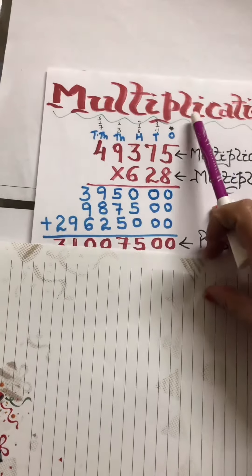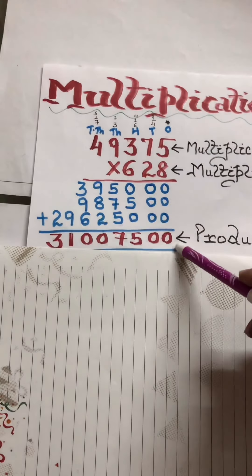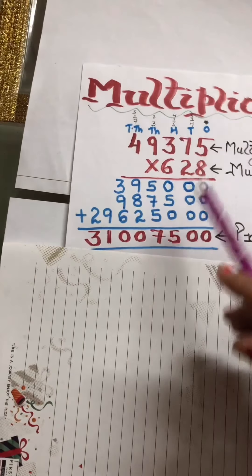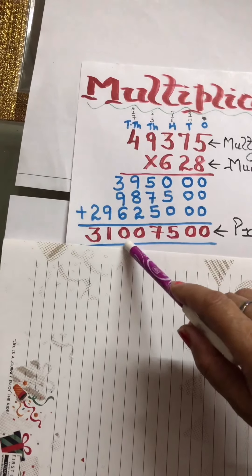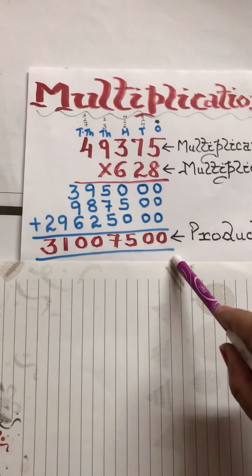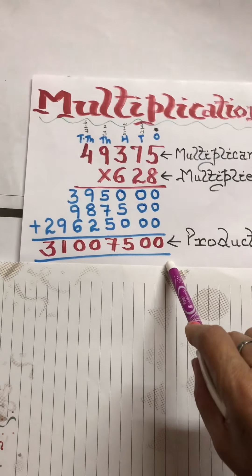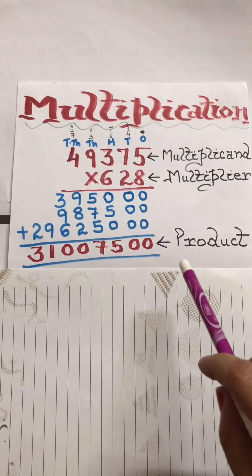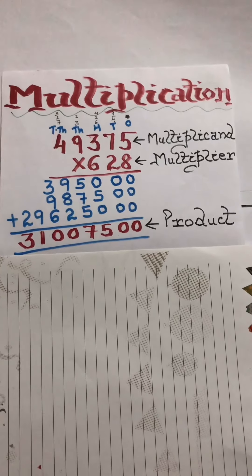Now you have to add all these numbers. So you are getting 0, 0, 5, 7, 0, 0, 1, and 31. This is the product — the answer of 49,375 multiplied by 628. This is called the product. I hope this multiplication of a 5-digit by a 3-digit number is clear to everybody. Thank you.